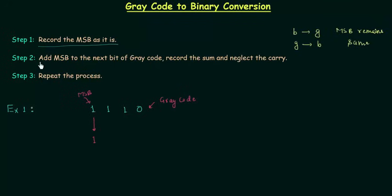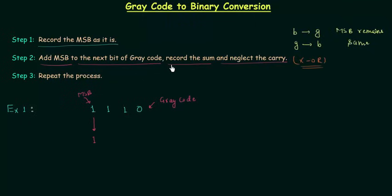In step number two we have to add the MSB to the next bit of gray code and record the sum, neglecting the carry. This is the most important step and there are two ways to do this: perform binary addition and record the sum neglecting the carry, or perform the XOR operation. In example one we will perform addition — we add the MSB and the next bit of gray code.